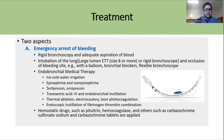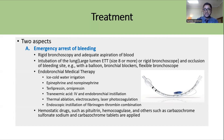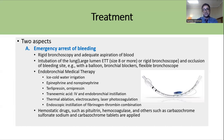Treatment has two aspects: emergency arrest of bleeding and subsequent management of the underlying cause. For emergency arrest, rigid bronchoscopy is very helpful as it allows adequate aspiration of blood and facilitates other interventions like fiber optic bronchoscopy or intubation. Usually the normal lung should be intubated with a large endotracheal tube of at least size 8 or more, so that the large lumen accommodates subsequent procedures.